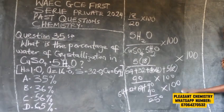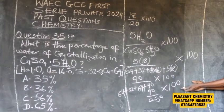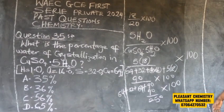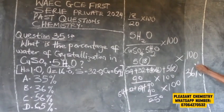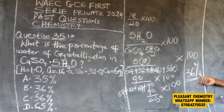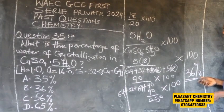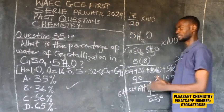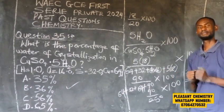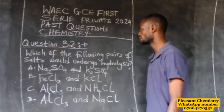Once we multiply by 100, our final answer is 36%. So the correct answer for question number 35 is option B, which is 36%.